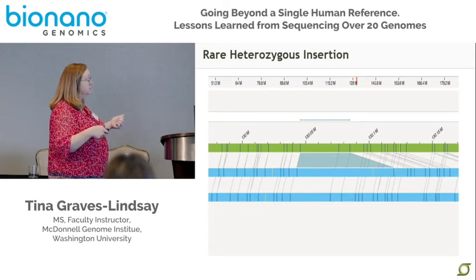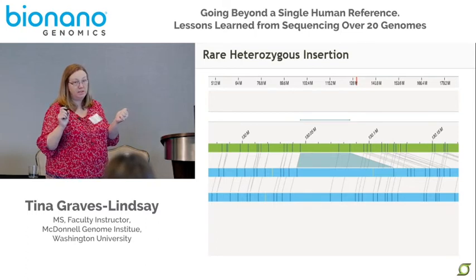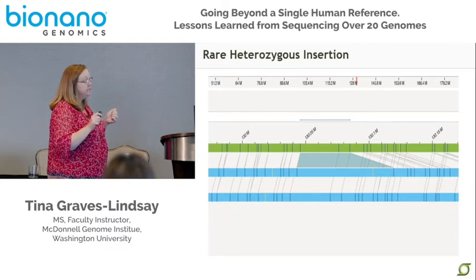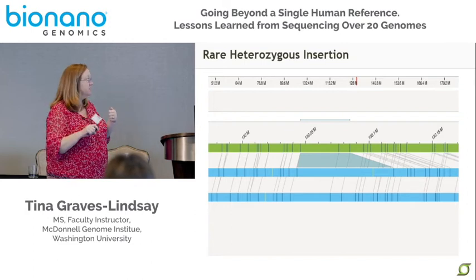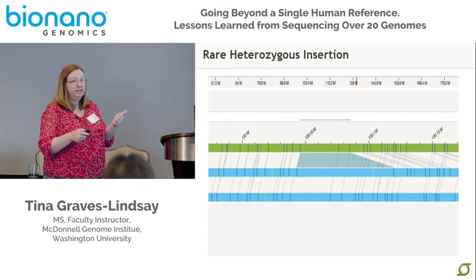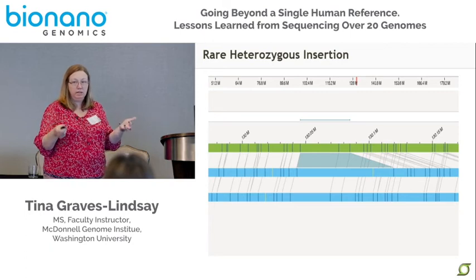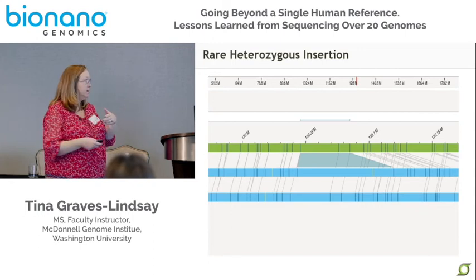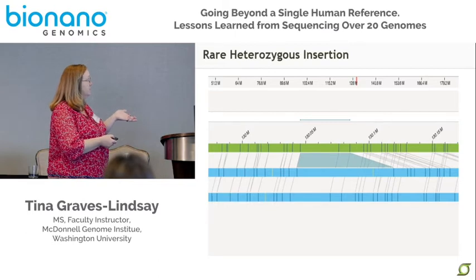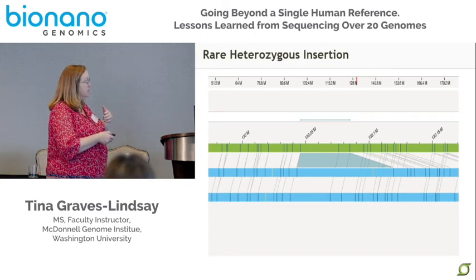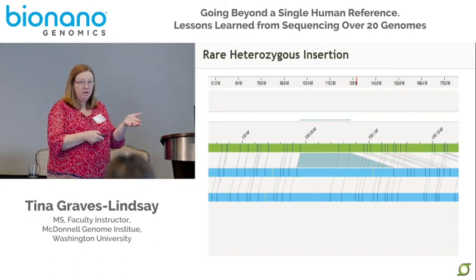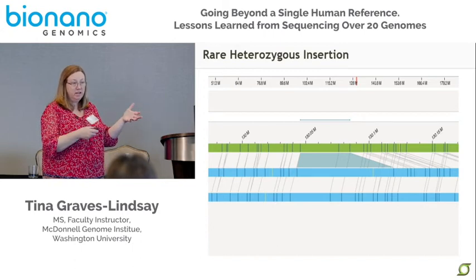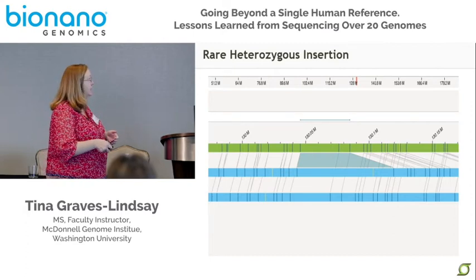Another thing we can do is run the variant annotation pipeline, which we ran on reference sequences to identify places that don't typically occur in the approximately 200 samples in the BioNano database of controls. Here's an example from a Mende assembly showing a rare insertion found in none of the datasets in the BioNano control dataset — but it could be something interesting. These are things we're looking at in more detail.